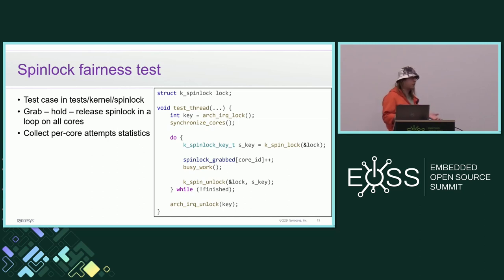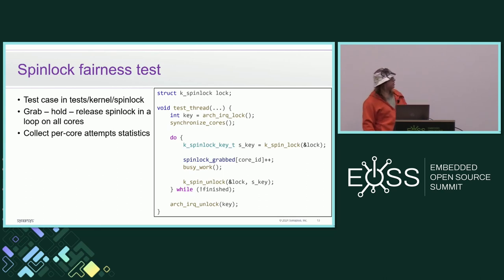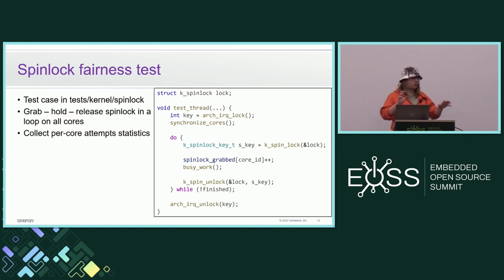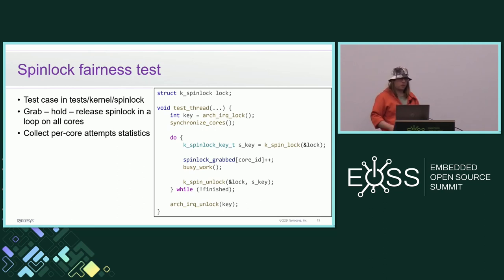It would be nice to have a test to reproduce this in a stable way, and now we have such a test in Zephyr — it's an additional test case in the kernel spinlock test. The test works by grabbing one spinlock, holding it for some time, and releasing it in a loop for all available cores. We need to hold it for some time to simulate the situation where multiple cores are pending for the spinlock. We also collect statistics on the number of times the spinlock was acquired on each specific core to judge whether everything is going okay.